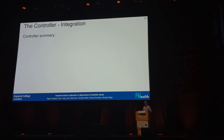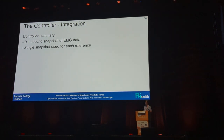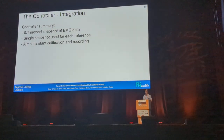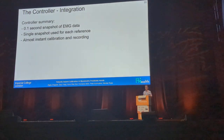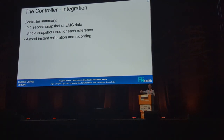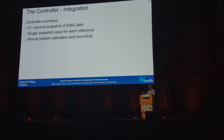So in summary of the controller: we take a 0.1 second snapshot of EMG data — very short, not much data at all. We only use a single snapshot for each reference, which means we get almost instant calibration and recording. If we want to calibrate it, we just do each action once, press record — like take a screenshot basically of that — and then we're done.